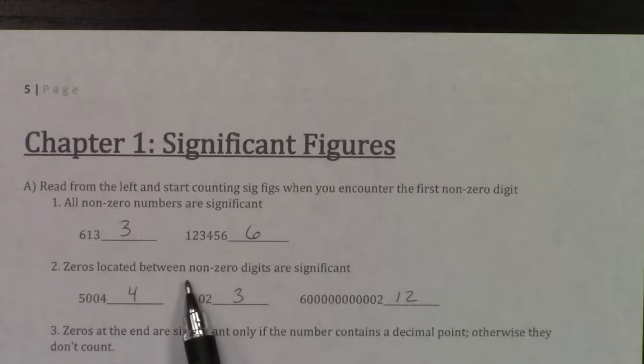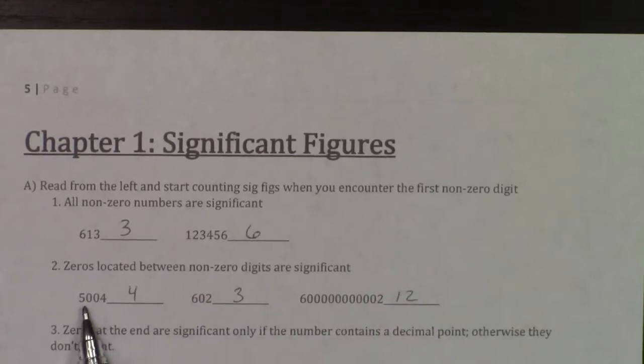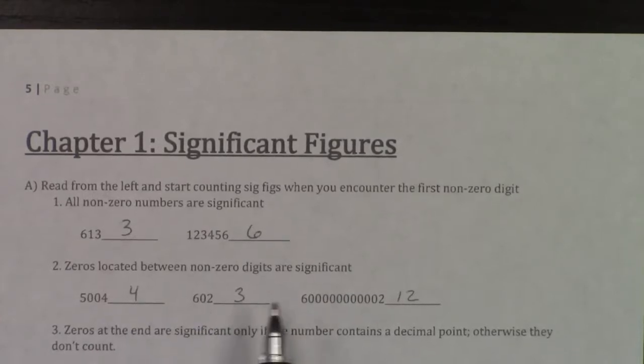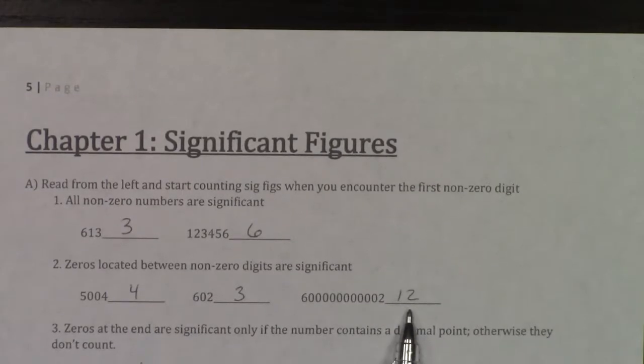Zeros located between non-zero digits are also significant. That's why the 5004 has 4 sig figs, the 602 has 3, and all these zeros in between the two non-zero digits are all significant.